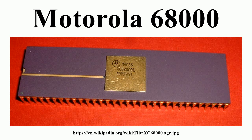By the mid-1980s, falling production costs made the 68000 viable for use in personal and home computers, starting with the Apple Lisa and Macintosh, and followed by the Commodore Amiga, Atari ST, and Sharp X68000. On the other hand, the Sinclair QL microcomputer was the most commercially important utilization of the 68008, along with its derivatives such as the ICL One-Per-Desk business terminal. Helix Systems designed an extension to the SWTP SS-50 bus, the SS-64, and produced systems built around the 68008 processor.